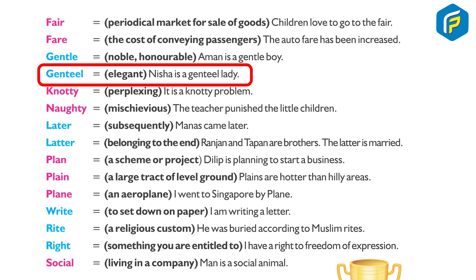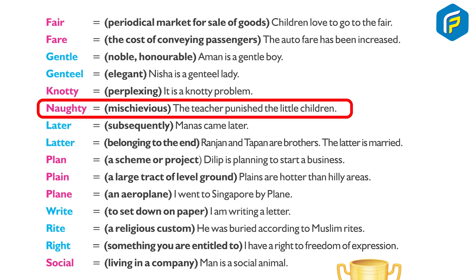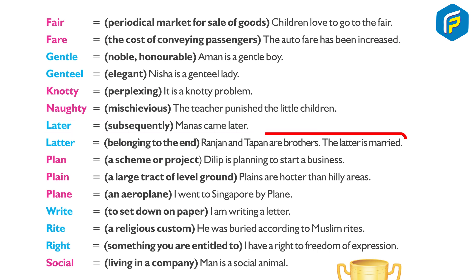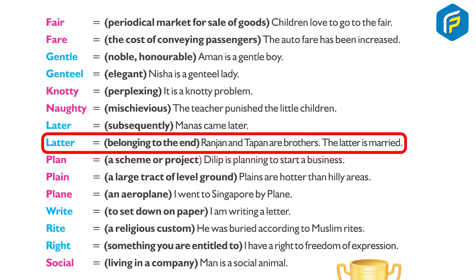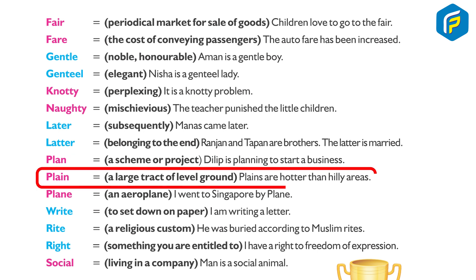Gentle: noble, honourable — 'Aman is a gentle boy.' Genteel: elegant — 'Nisha is a genteel lady.' Knotty: perplexing — 'It is a knotty problem.' Naughty: mischievous — 'The teacher punished the naughty children.' Later: subsequently — 'Manas came later.' Latter: belonging to the end — 'Ranjan and Tapan are brothers; the latter is married.'